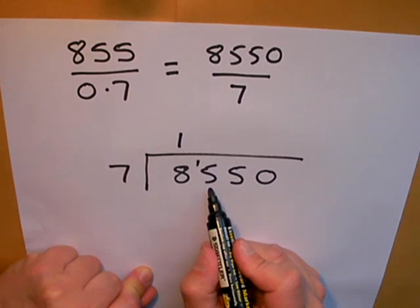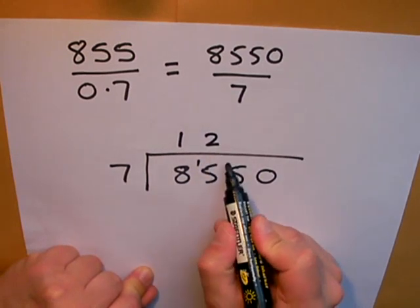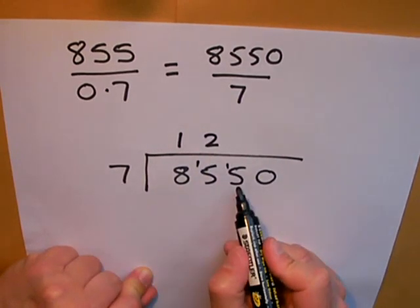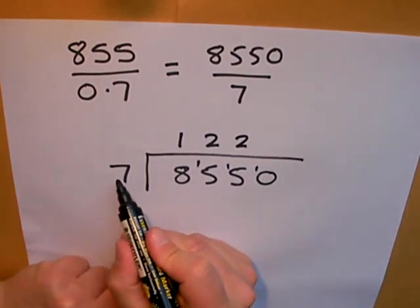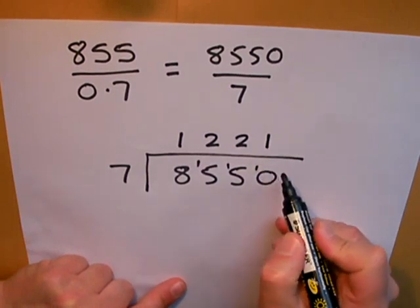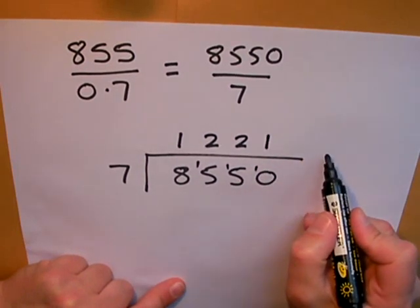How many sevens into 15 again? Go 2 remainder 1. Finally, how many sevens go into 10? That's 1 remainder 3. I can write remainder 3 if I want to.